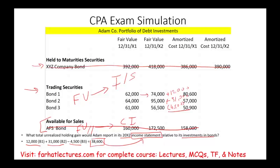In this simulation, we looked at three things: three different securities, and we needed to know where each security goes, whether it's adjusted for fair value or not, and where we report the fair value adjustment. For simplicity, I did not ask you to prepare journal entries — I could have asked you to prepare the journal entry at the end of the year for each question, but I didn't want to complicate the simulation further. You will find journal entries, multiple choice, simulations, and true-false on Farhat Lectures, whether you're an accounting student, studying for the CPA exam, or the CMA exam. Invest in yourself. Study hard. Good luck and stay safe.